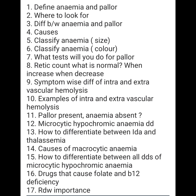Classify anemia based on size. The parameter used is MCV — mean corpuscular volume. If it is less than 80, it is microcytic. If it is 80 to 100 femtoliters, it is normocytic. And more than 100 is macrocytic anemia.